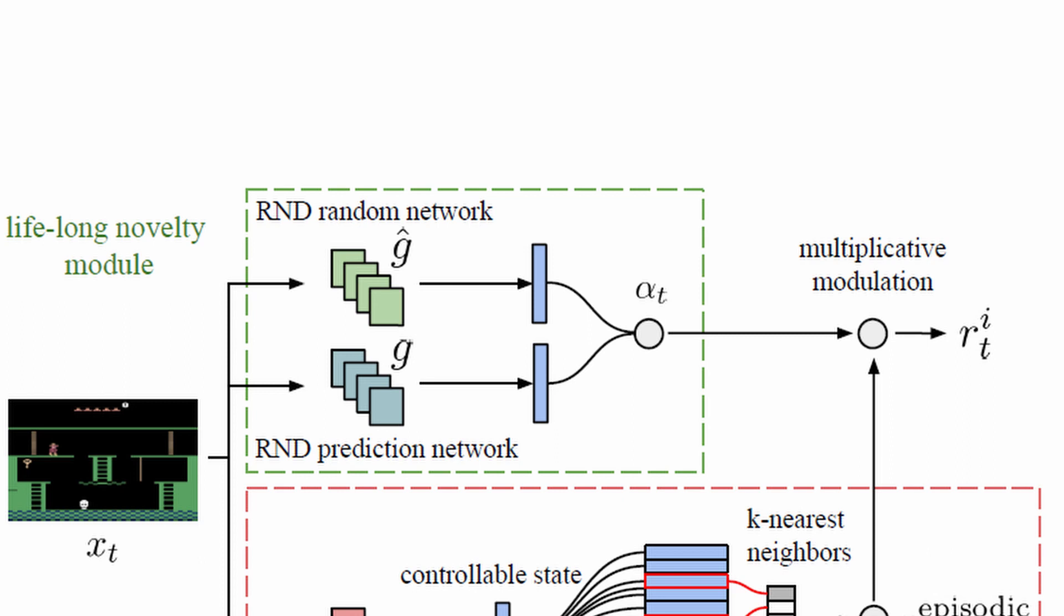It uses a method called random network distillation that produces an exploration bonus based on the prediction error between a fixed and randomly initialized neural network and a second neural network. This second neural network is trained to predict the outputs of the fixed random network on the states already visited.